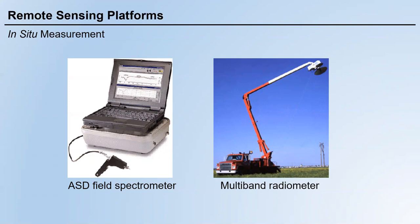I want to provide some examples. On the left side, we have a very famous brand for field spectrometer called ASD. This equipment is a combination of a laptop and a spectrometer. There is a handheld spectrometer gun, and when you aim this gun at a specific object, the spectrometer will collect the reflection spectrum of that object.